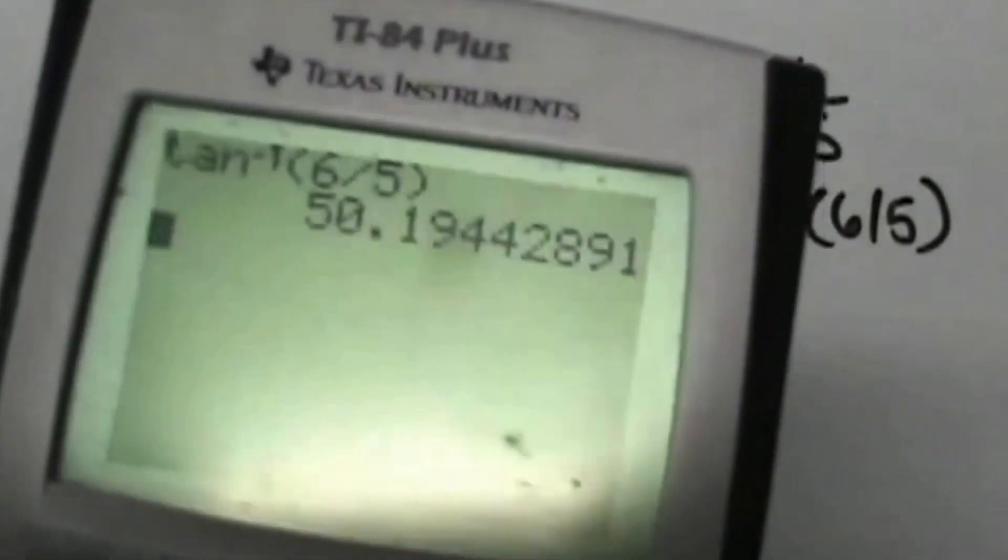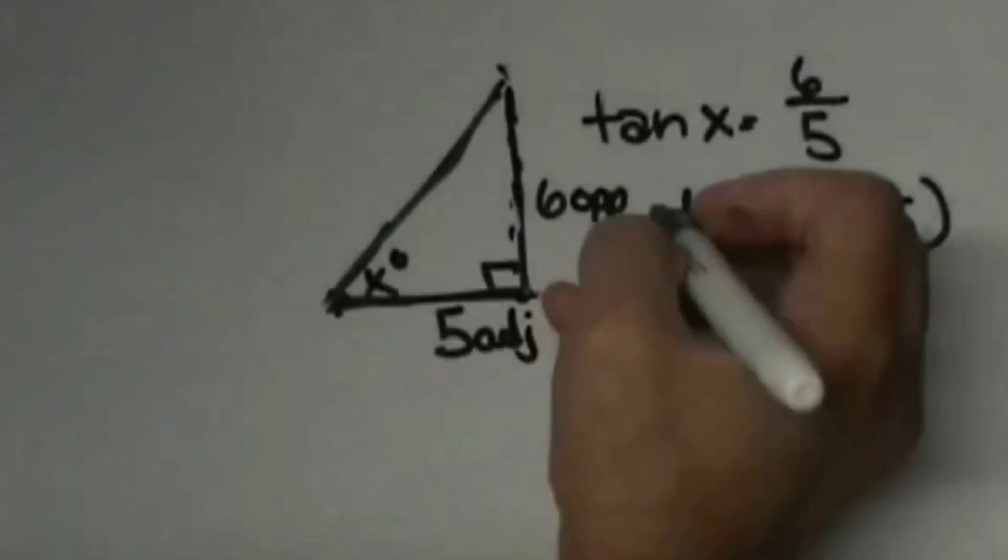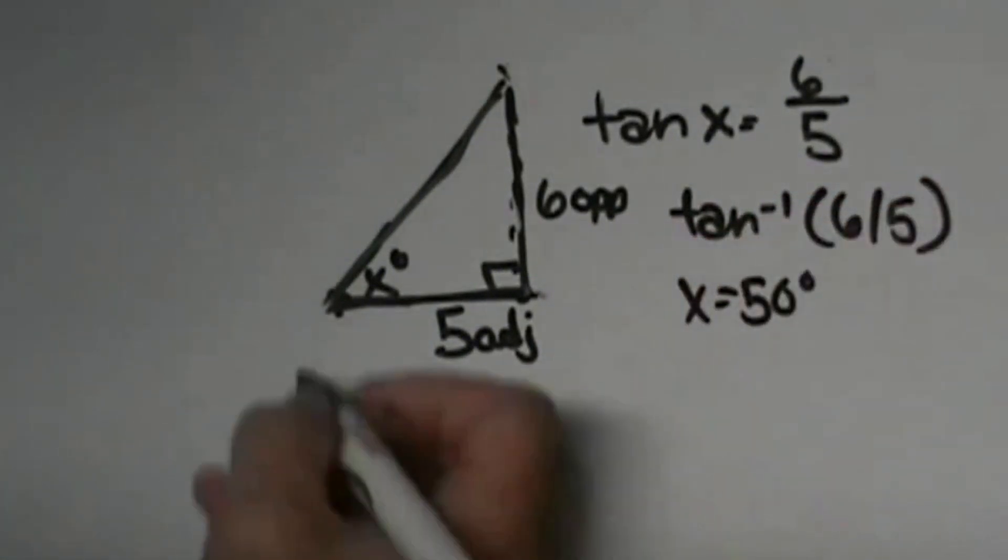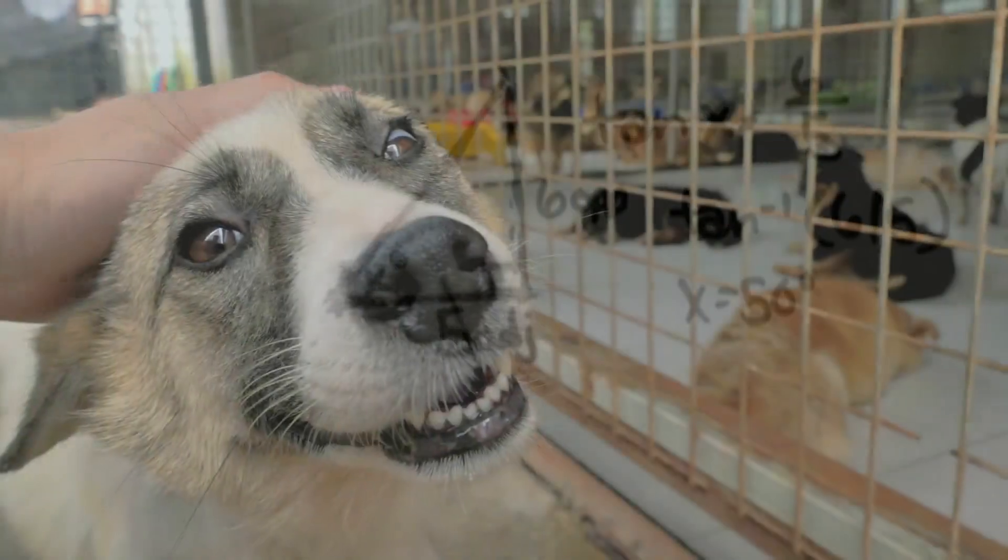Okay, so we can just round that to 50 degrees. So x is 50 degrees. Okay, so if we go back to the original drawing, let's go back to the original drawing.